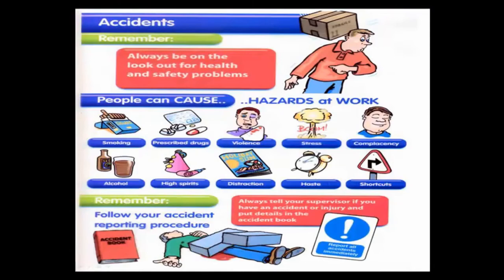Always be on the lookout for health and safety problems. Always take the initiative — if you see something that has the potential to cause an accident, report it without delay. Don't assume the hazard has already been reported. Always follow your accident report procedure, always tell your supervisor if you have an accident or injury, and put details in the accident book. This applies to all accidents regardless of triviality — even a paper cut — because if you don't, you have no evidence that the accident happened, especially if something develops later on.